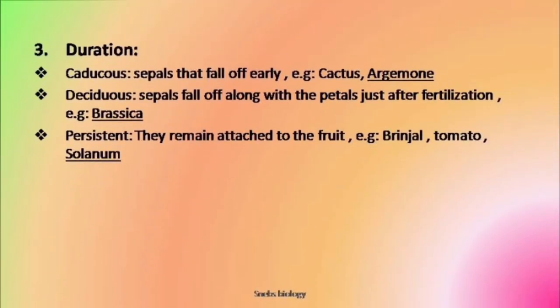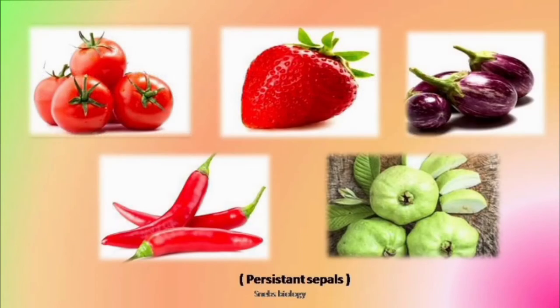The third condition is when the sepals remain attached even after the fruit is formed — those sepals are known as persistent sepals. Persistent sepals are seen attached to the fruit; for example, in brinjal, the green structures still there are actually persistent sepals. We also see it in strawberries, chilies, etc. Even after fruit formation has taken place, the sepals remain there.